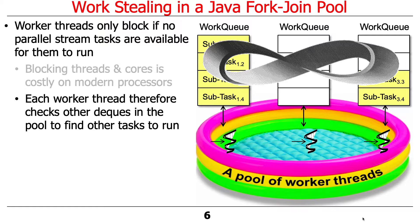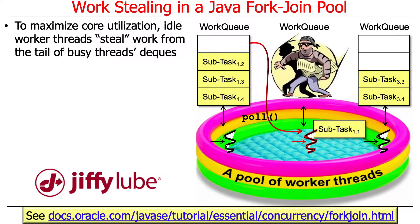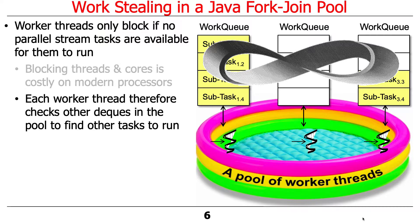So when a worker thread goes to check its deck — its work queue — and finds its work queue empty, it will check other decks in the pool to try to see if they have work that it can steal. And it's going to do this in a random way — it randomly checks these decks to try to avoid always going to the same place and having lots of contention.